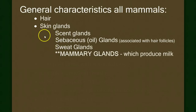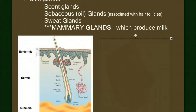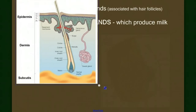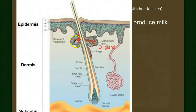Mammals are the only animals that can sustain their young by feeding them from nourishment of their own body. Let's take a closer look at these skin glands. If we zoom into this diagram, we can see a hair follicle, and associated with that follicle is a sebaceous gland that produces oil. That oil gland lubricates the hair as it moves out.